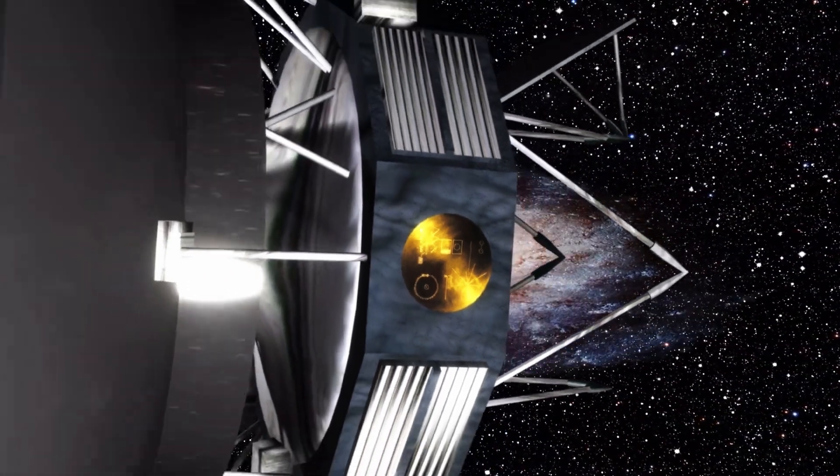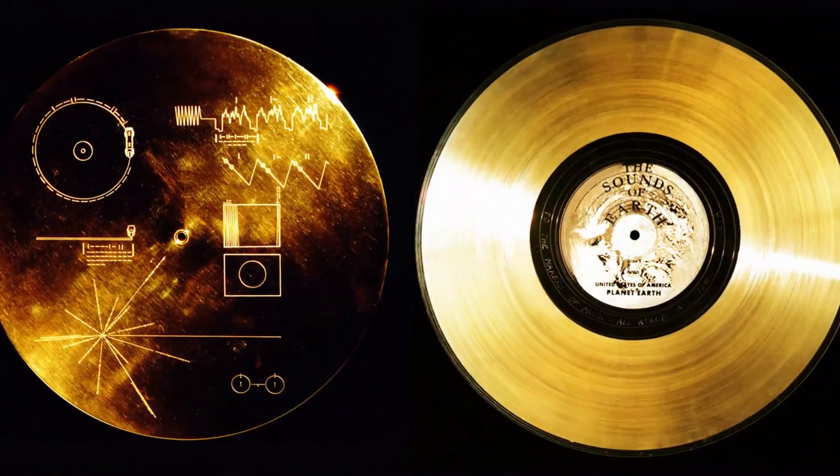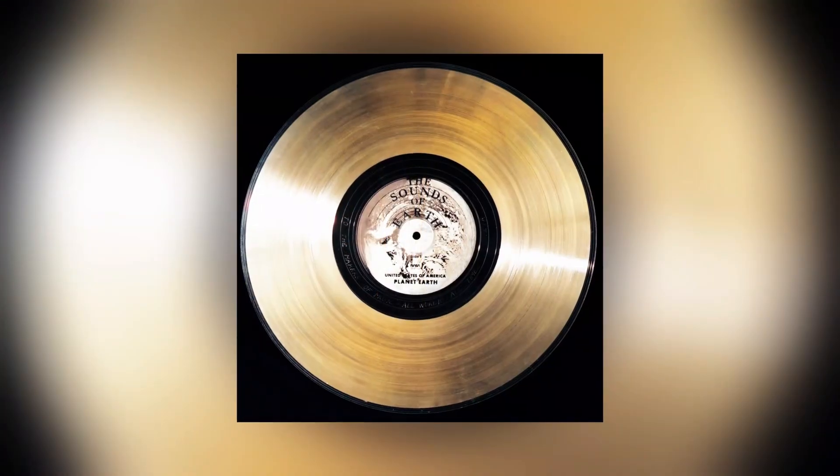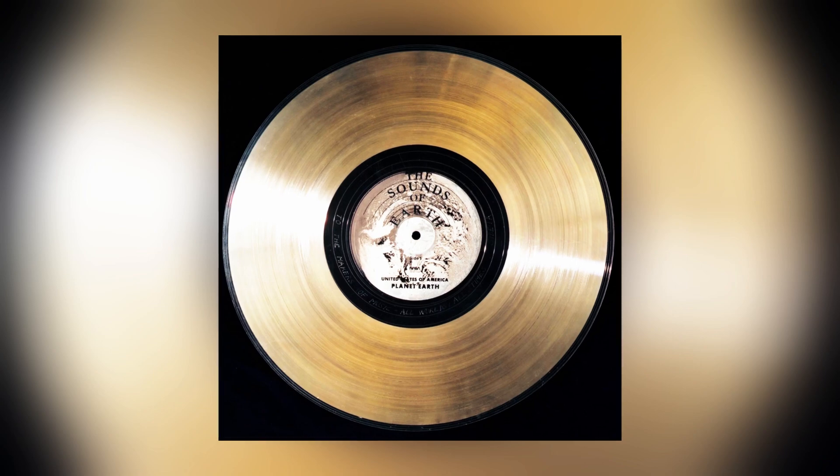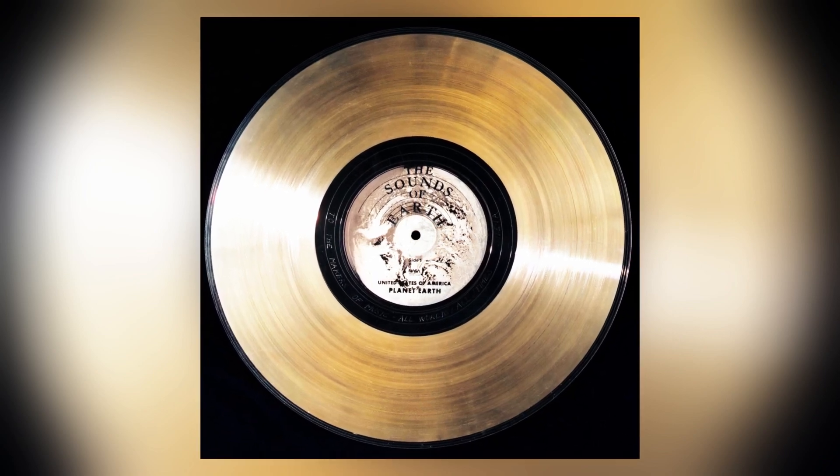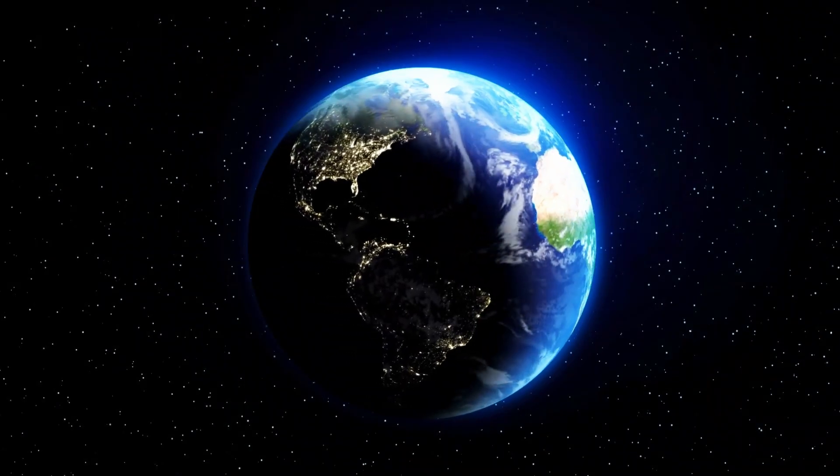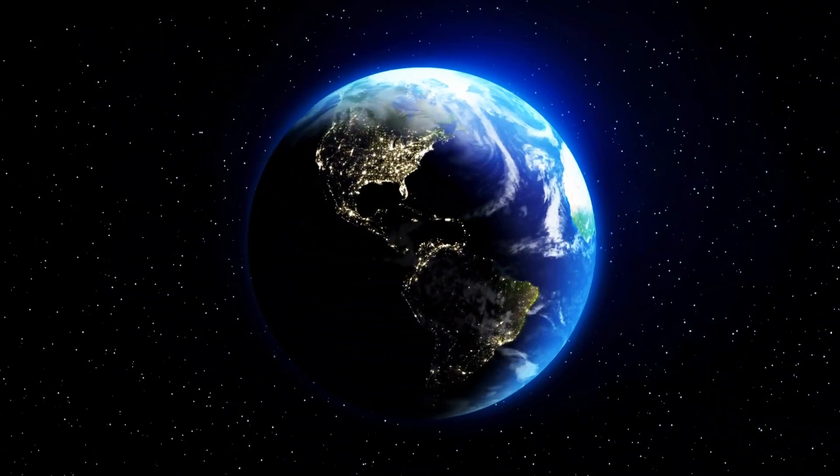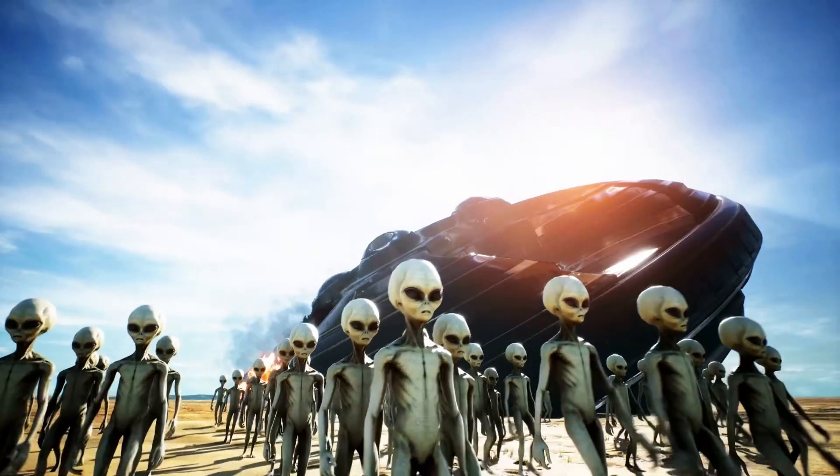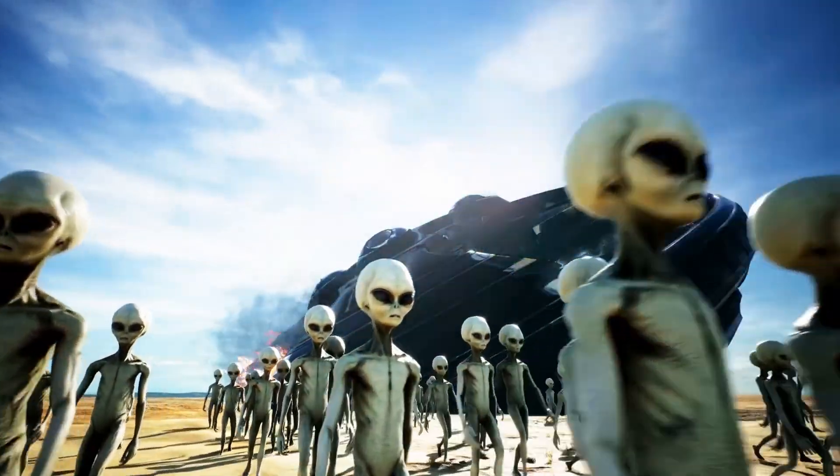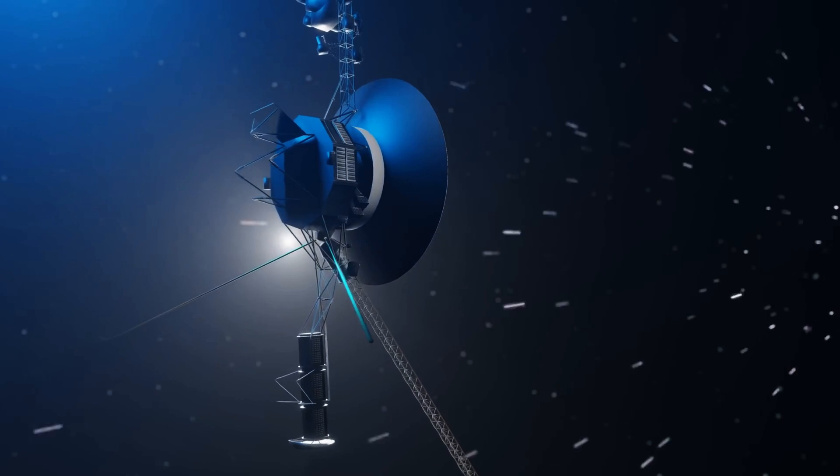Yet, one of the most remarkable aspects of the Voyagers is their golden phonograph records. These gold-plated copper discs contain 115 analog encoded photographs, greetings in 55 languages, a 12-minute montage of Earth sounds, and 90 minutes of music. These were designed in case an extraterrestrial civilization ever finds one of the probes.